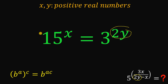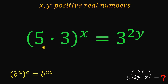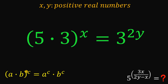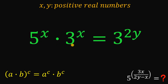Next, 15 can be written as 5 times 3. Another law of exponents says that when we have (a times b) raised to the power of c, it equals a raised to the power of c multiplied by b raised to the power of c. So the left hand side of our equation can be written as 5 raised to the power of x multiplied by 3 raised to the power of x.